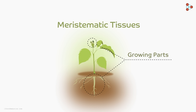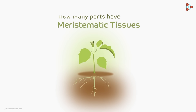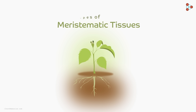All the parts of the plant do not show growth — growth is restricted to only certain parts of the plant. What's interesting is that meristematic tissue is named differently based on the part where it is found. There are three different parts of plants that have meristematic tissues, and the tissue in each part has a different name.